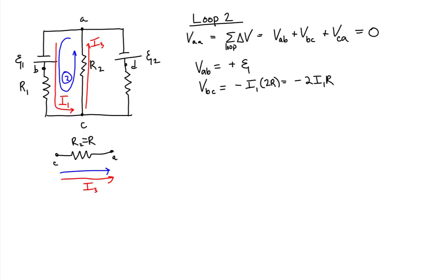What this means is the potential difference from C to A across resistor 2 is equal to minus current through resistor 2 times the resistance of resistor 2.